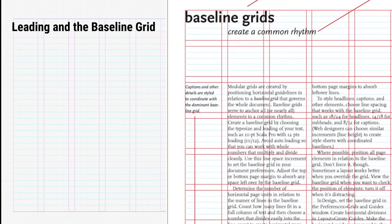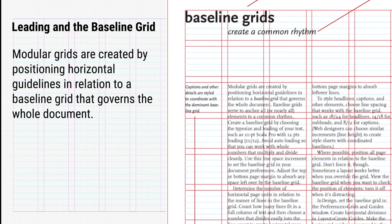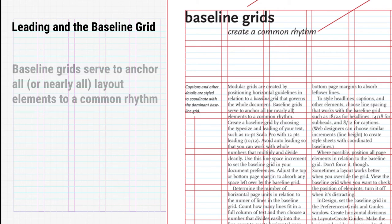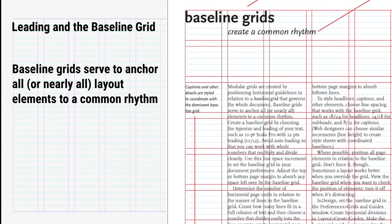So the question is, how are baseline grids related to modular grids? As Ellen Lupton says, modular grids are created by positioning horizontal guidelines in relation to a baseline grid that governs the whole document. Baseline grids serve to anchor all, or nearly all, layout elements to a common rhythm. Here we can see both Ellen Lupton and Robert Bringhurst use a metaphor of rhythm and music to describe leading.